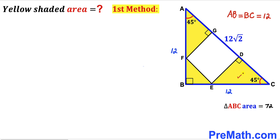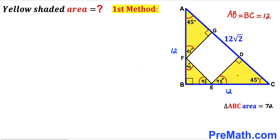In the yellow right triangle on the left, one angle is 45° and another is 90°, so the third angle must also be 45°. Since all angles of the white square are 90°, the adjacent angles in the other yellow triangles are also 45°. Likewise, in the yellow right triangle on the right, if one angle is 45° then the other is 45° as well. So all of the yellow triangles are isosceles triangles. In the next step, I'm going to draw the diagonals of the white square.